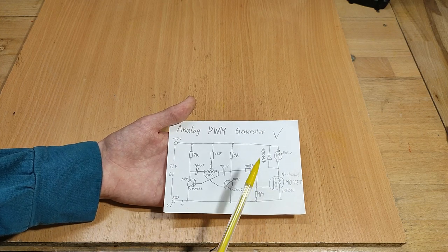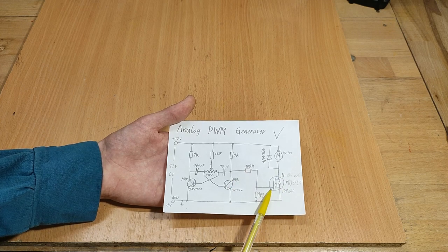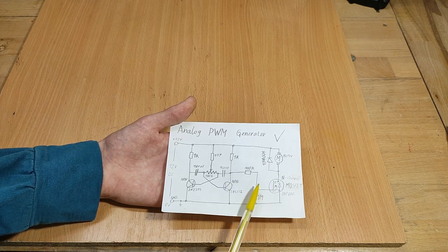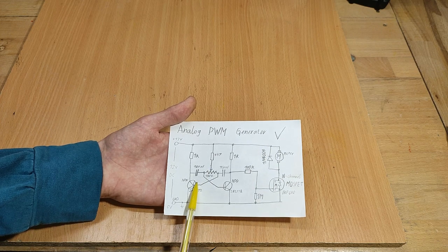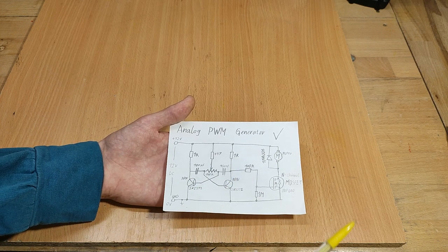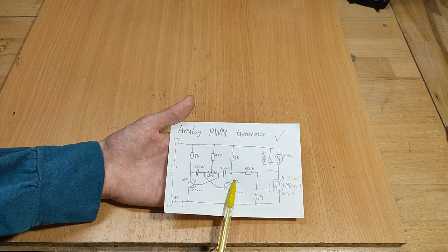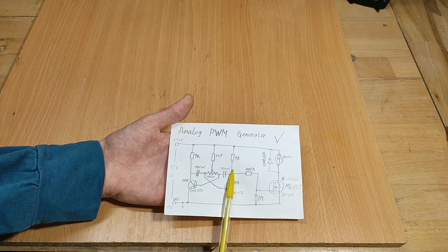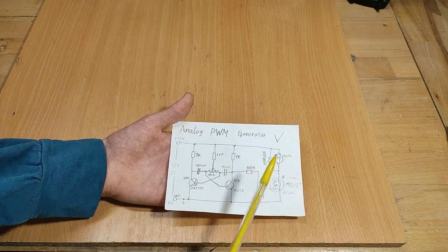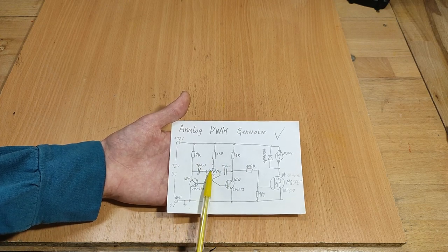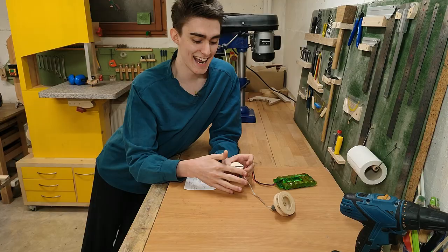Of course, the signal is inverted in the process, meaning the MOSFET only turns on when this transistor is off, incidentally pairing the load with the left transistor instead of the right one, but that doesn't actually matter, because the multivibrator is equal on both sides anyway, so effectively it really only changes the direction you need to turn the potentiometer to increase the duty cycle.